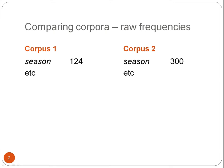In corpus linguistics, it's often useful to compare corpora in terms of frequency. But looking at this example here, we only know that the word 'season' is more frequent in corpus 2 than in corpus 1 if the two corpora are the same size. So this is what you call raw frequency — simply how often the word or linguistic feature occurs. We can use raw frequencies for comparing corpora that have the same number of words, but often we need to compare frequencies across corpora of different size.